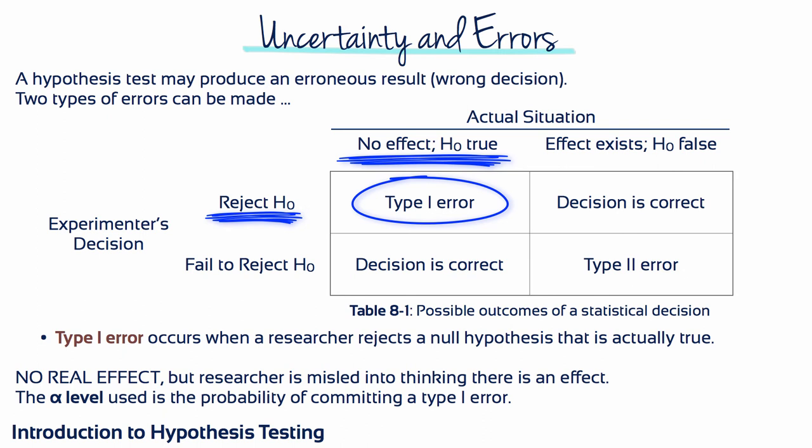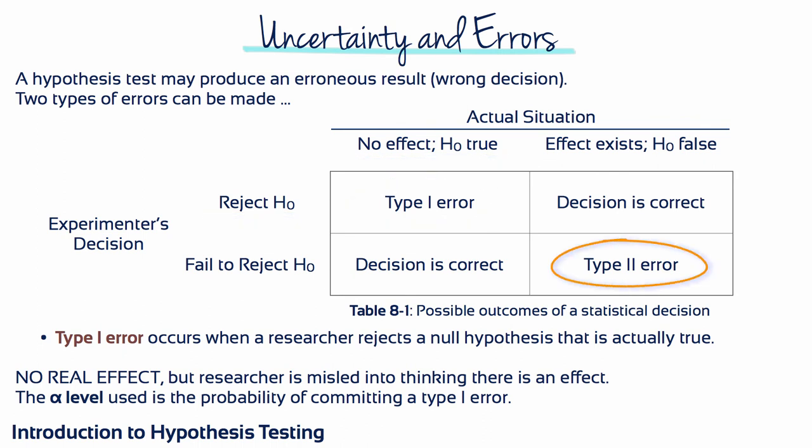A type 1 error occurs when a researcher unknowingly obtains an extreme, non-representative sample. Fortunately, the hypothesis test is structured to minimize the risk that this will occur. A type 2 error occurs when a researcher fails to reject a null hypothesis that's really false — in other words, the treatment really did do something, but the researcher is misled into thinking there's no effect. A type 2 error occurs when the sample mean is not in the critical region, even though the treatment has had an effect. Often this happens when the effect of the treatment is relatively small — the treatment does influence the sample, but the magnitude of the effect is not big enough to move the sample into the critical region.